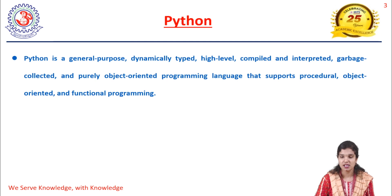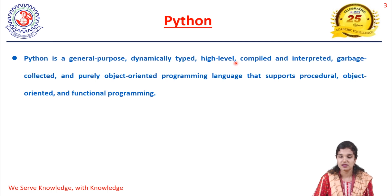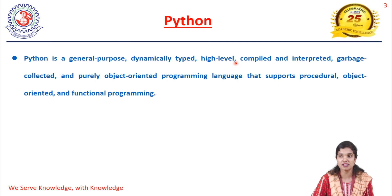High-level language means it is very easy to read and write. Python is one of the high-level programming languages. Python is also both a compiled and interpreted programming language. Compiled means we convert the main source code into machine code — that is a compiled language. Interpreted means we convert and execute the program's instructions line by line.